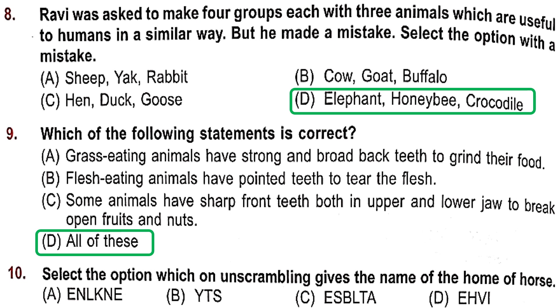Question 10: Select the option which on unscrambling gives the name of the home of horse. The home of horse is stable. The option that gives us 'stable' is Option C.